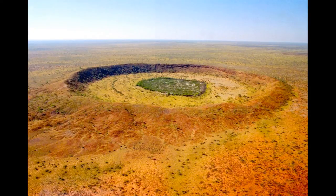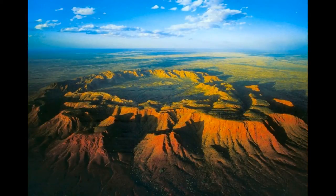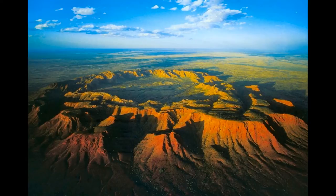And here's another one called Wolf Creek in Western Australia. Some of them are rather beautiful. For example, here is a photograph of Gosse's Bluff, which is about 200 kilometres west of Alice Springs.